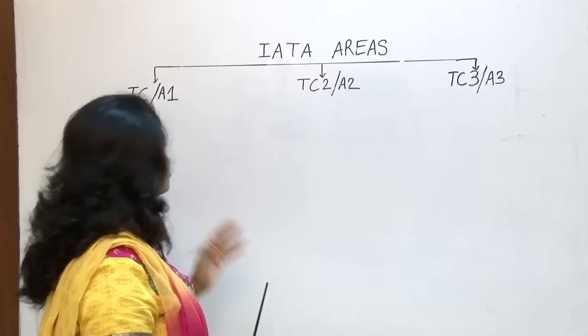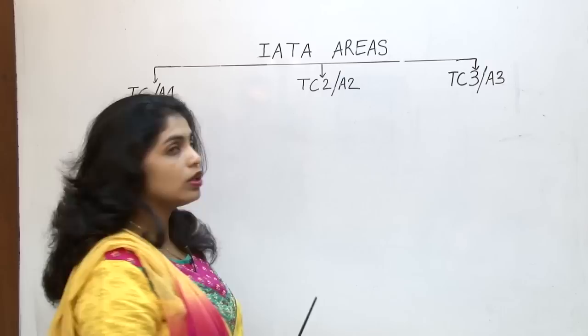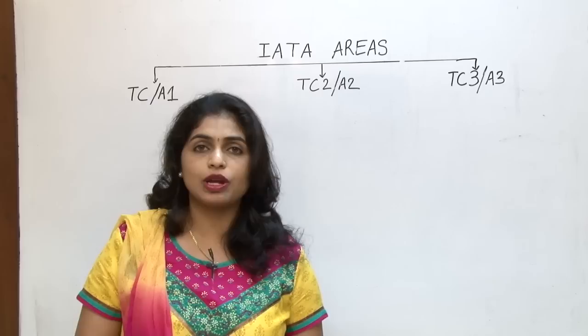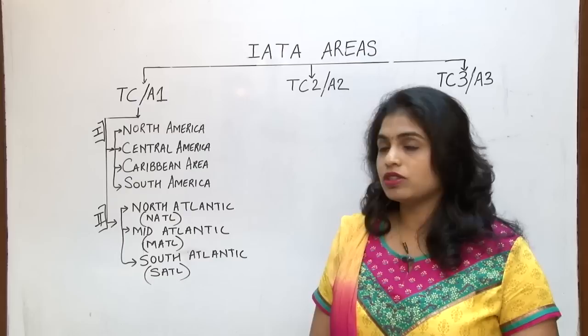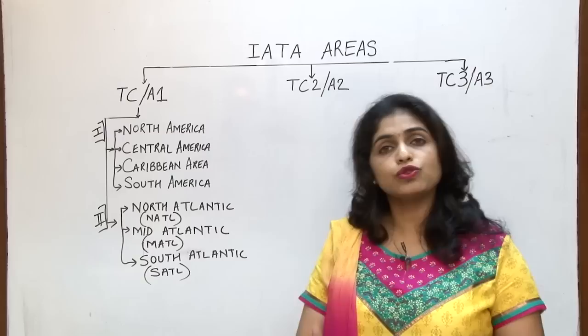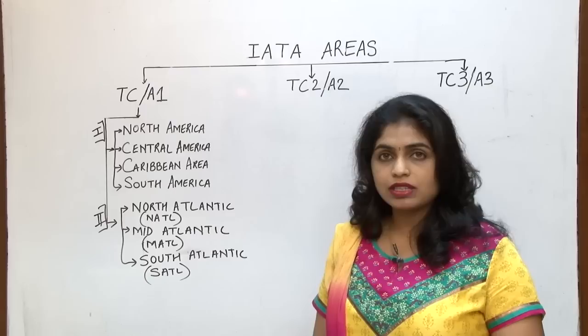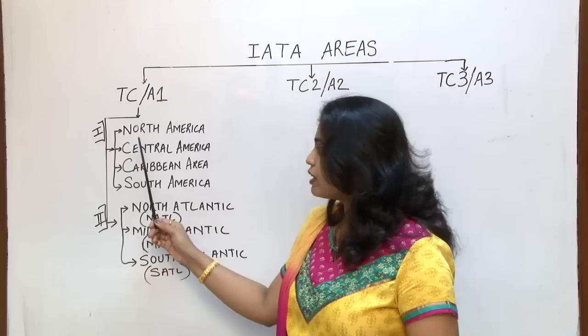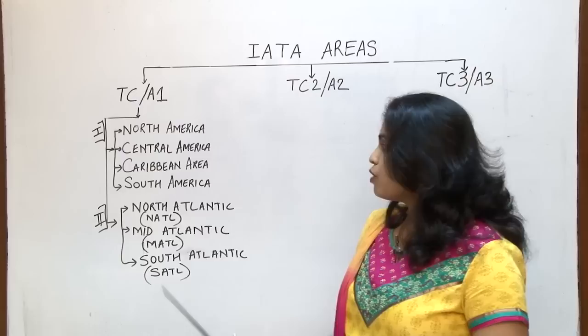These areas are further divided into sub areas. Let us concentrate on IATA area 1 or traffic conference area 1. There are two types of classification. In the first classification it gets divided into four sub areas: North America, Central America, Caribbean areas, and South America.